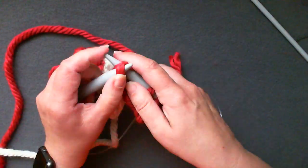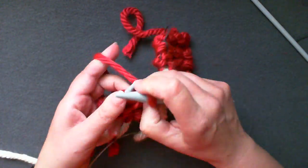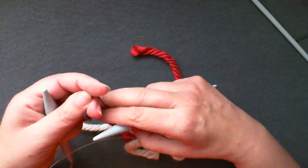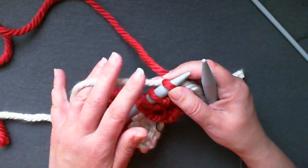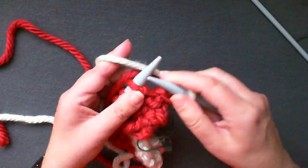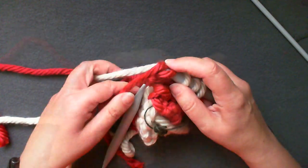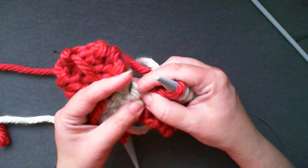Finish the number of rows indicated, change color weaving in the yarn tails as you go until you get to the last stitch of the first row. Slip that stitch onto your right needle as usual.